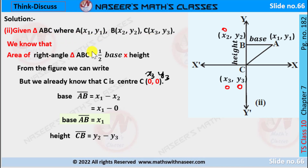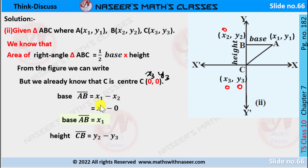Here the given right angle triangle has vertices A(x1, y1), B(x2, y2), C(x3, y3). The area of triangle ABC equals half times base times height. From the figure, C is the origin with coordinates (0, 0). On the y-axis, x equals 0, so x2 equals 0. Therefore base AB equals the difference of x1 and x2, which gives x1 minus 0, so base AB equals x1.